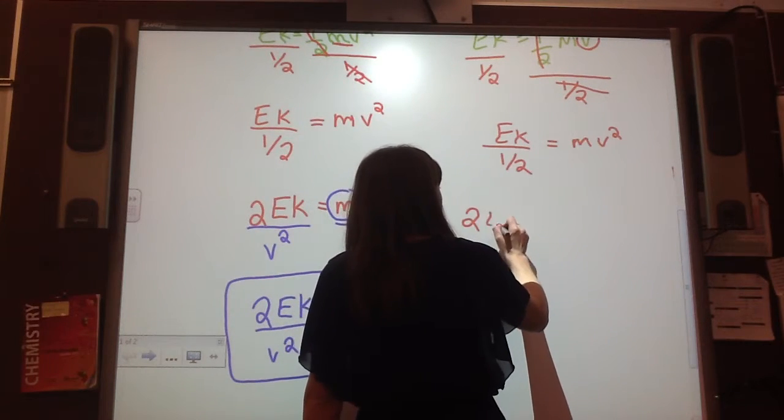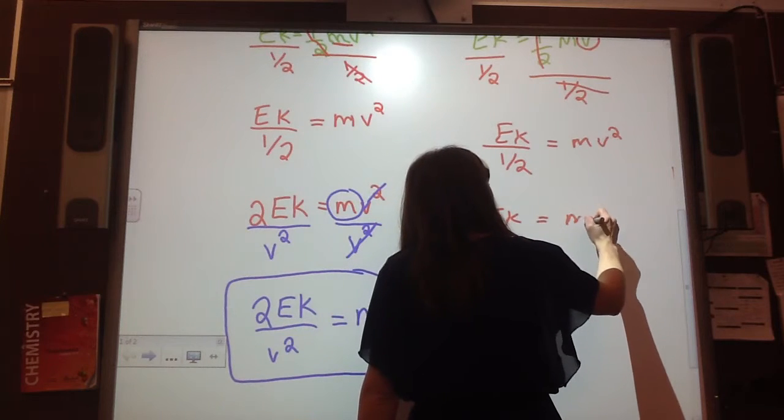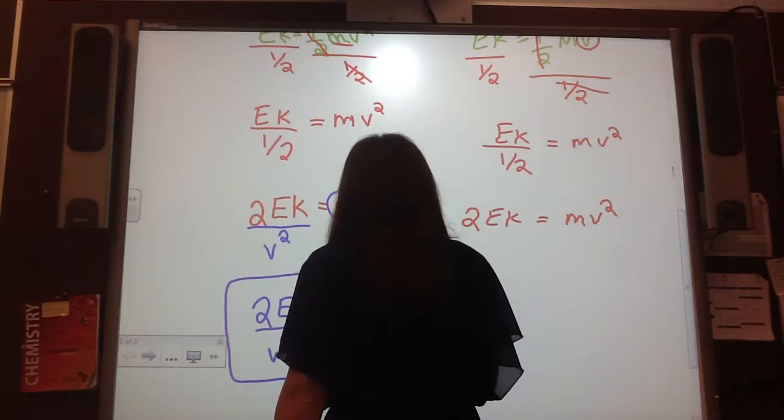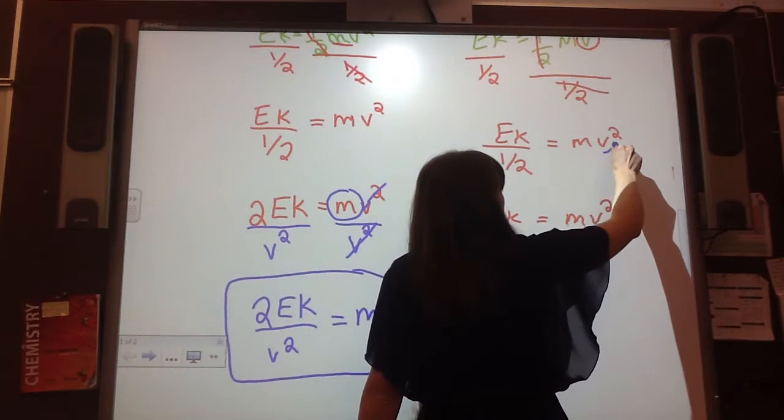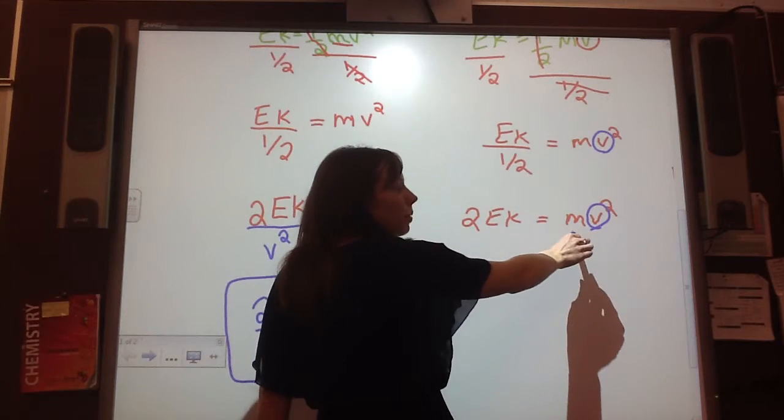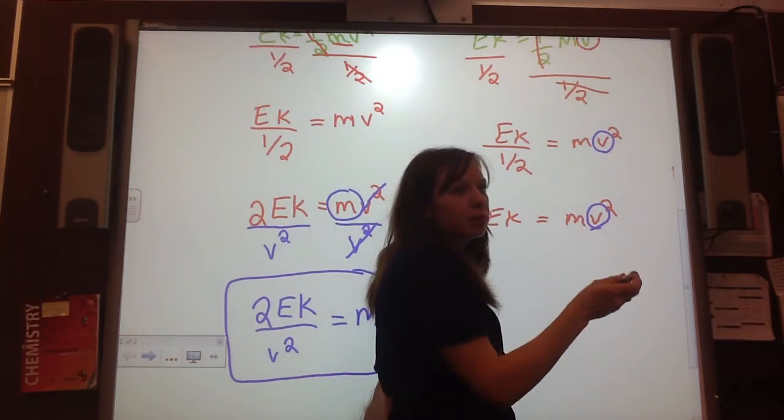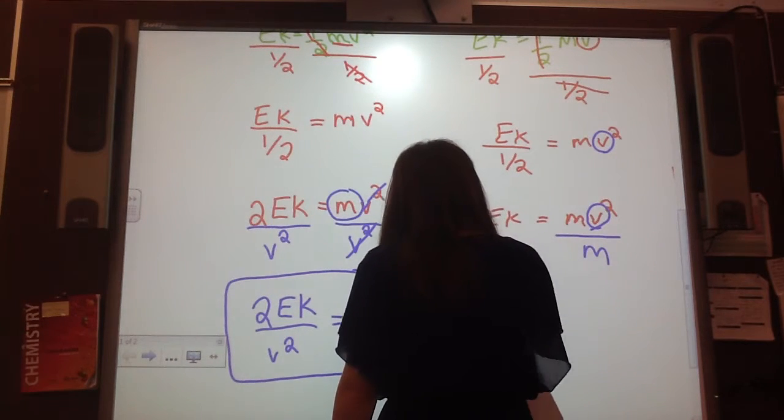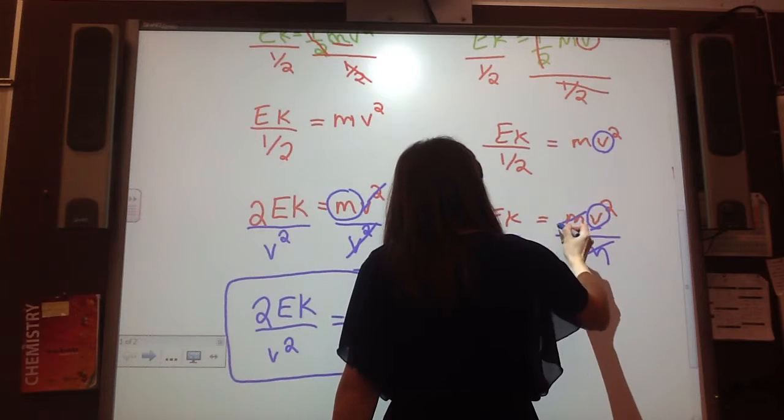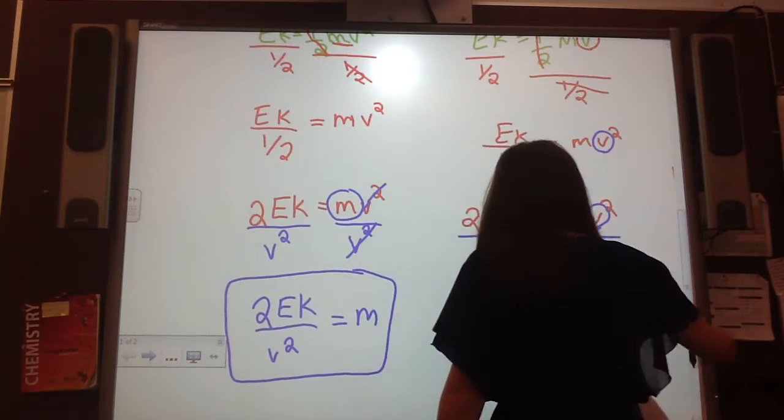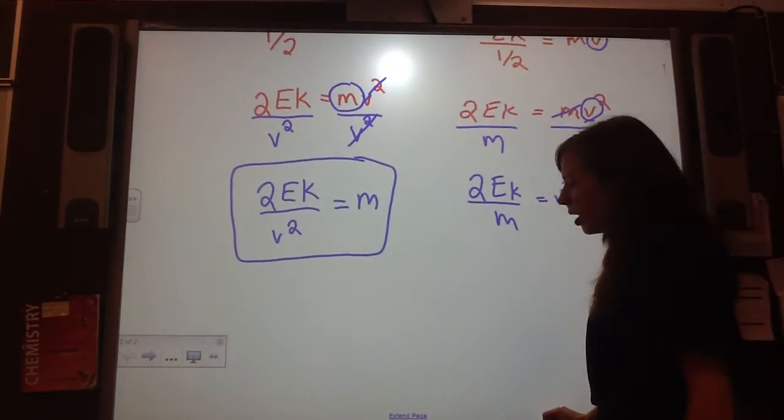Again, dividing by half is the same thing as multiplying by 2. So I have 2Ek is equal to mv squared. It means the same thing as what I just did. I didn't change anything. Now, say I want to solve for v. V is multiplied by m. The opposite of multiplying is divide by m. m's cross out. So I'm left with 2Ek divided by m is equal to v squared.